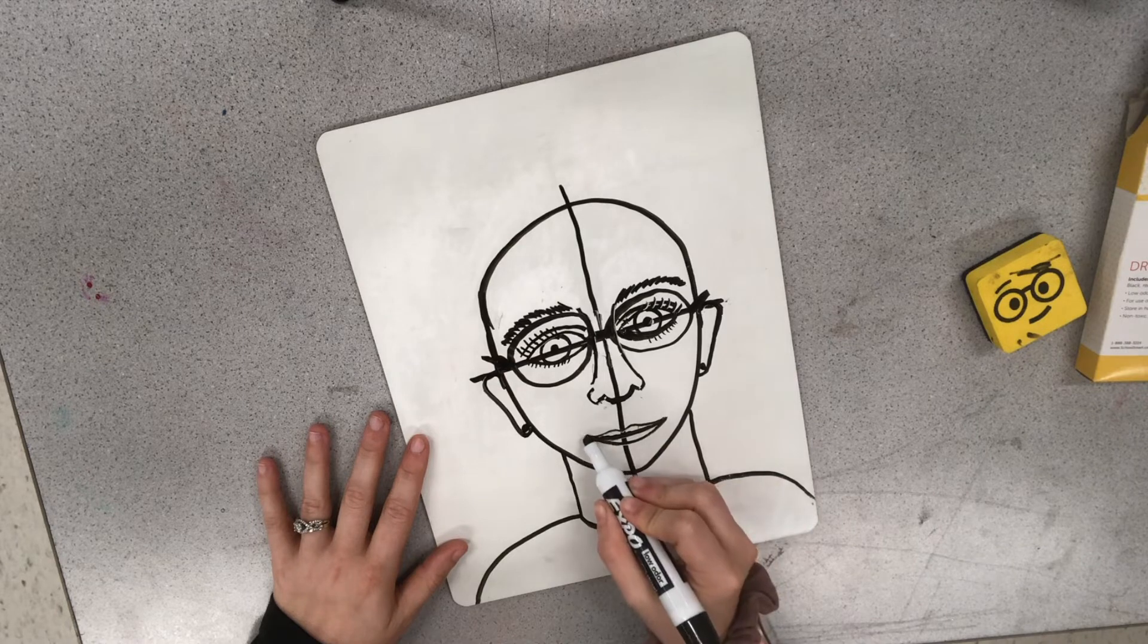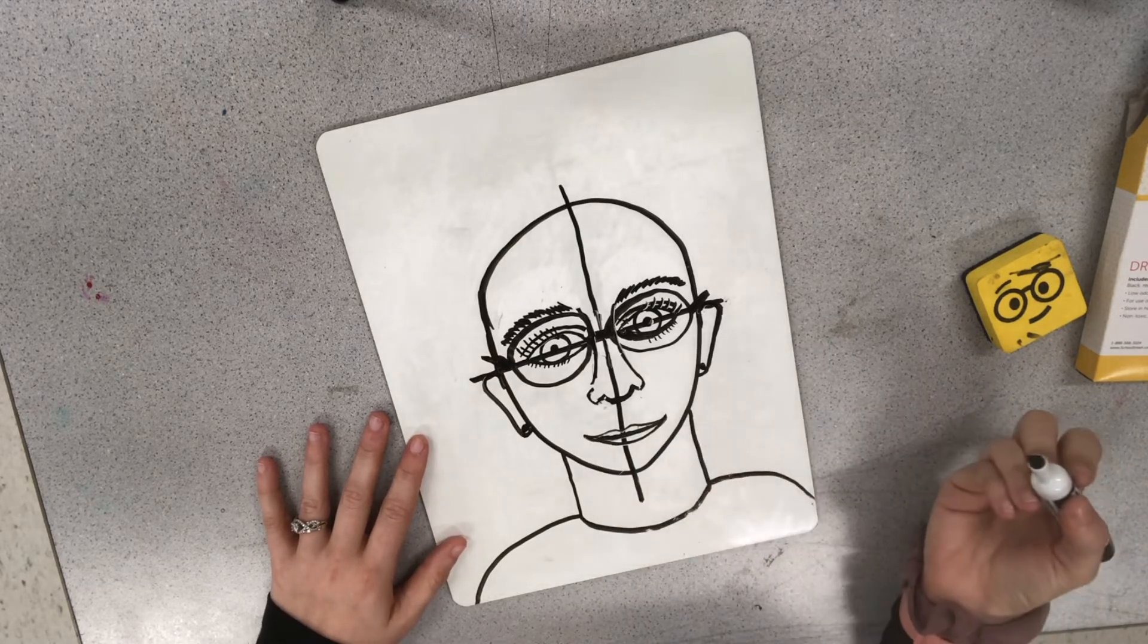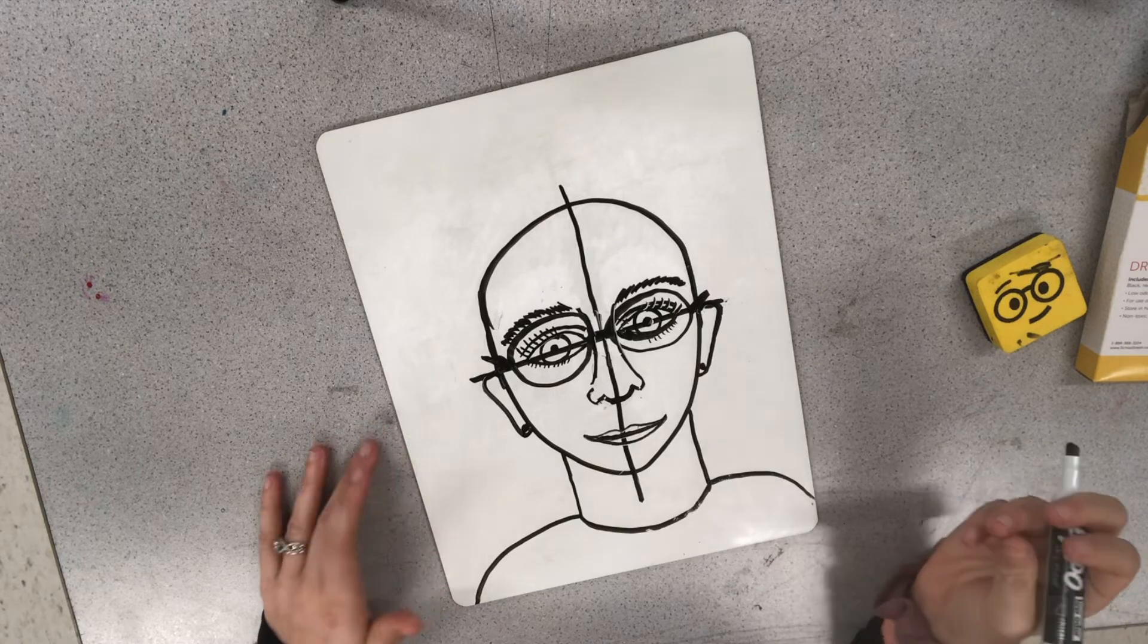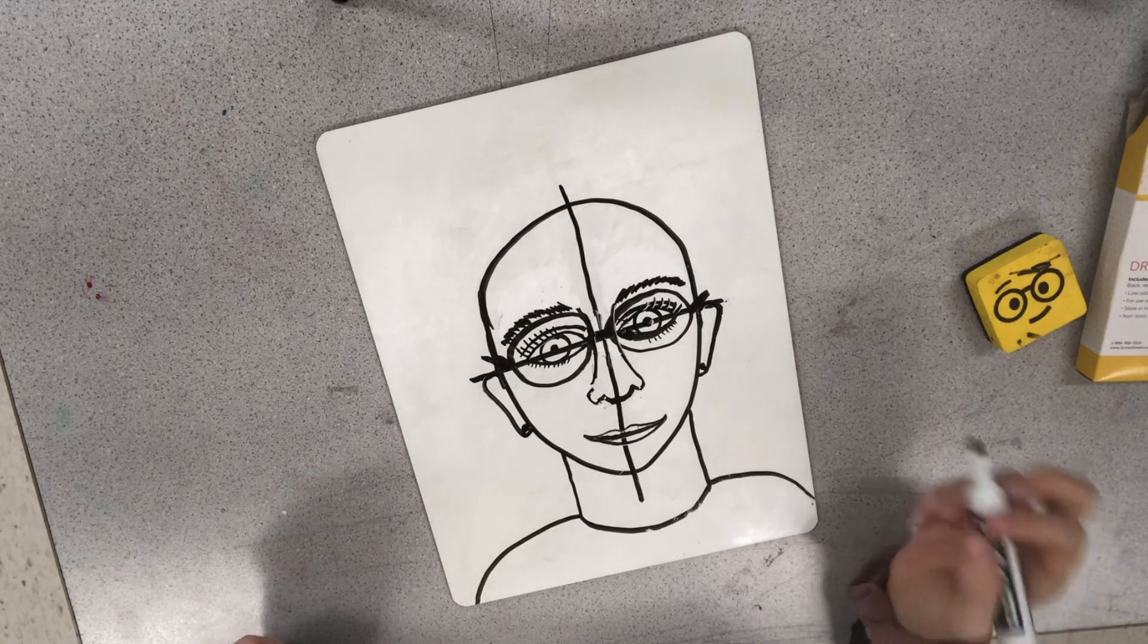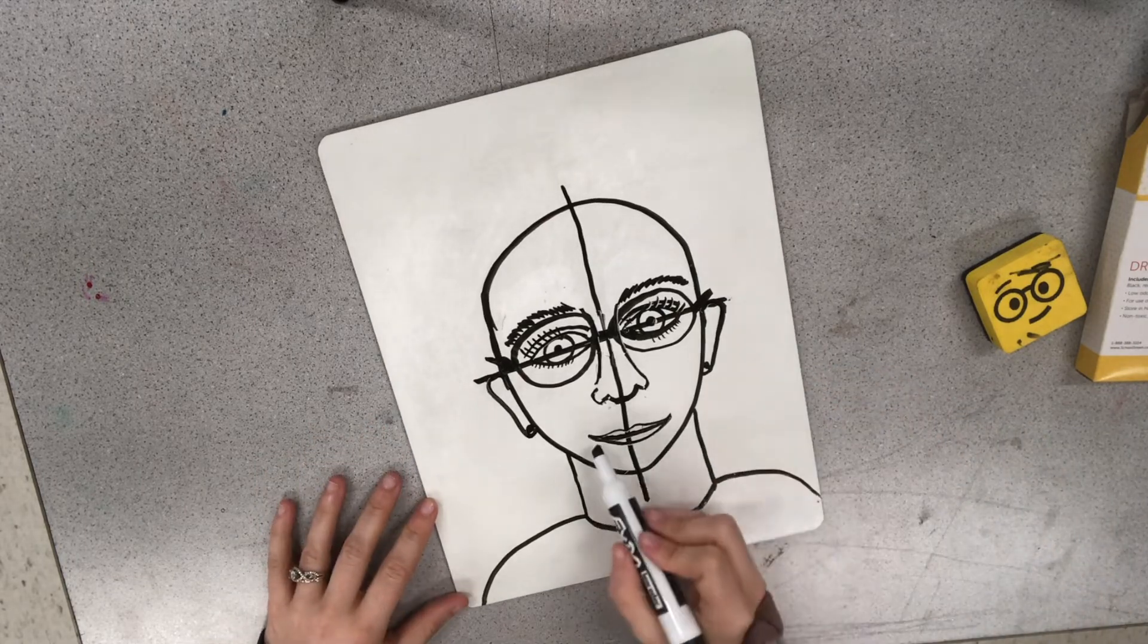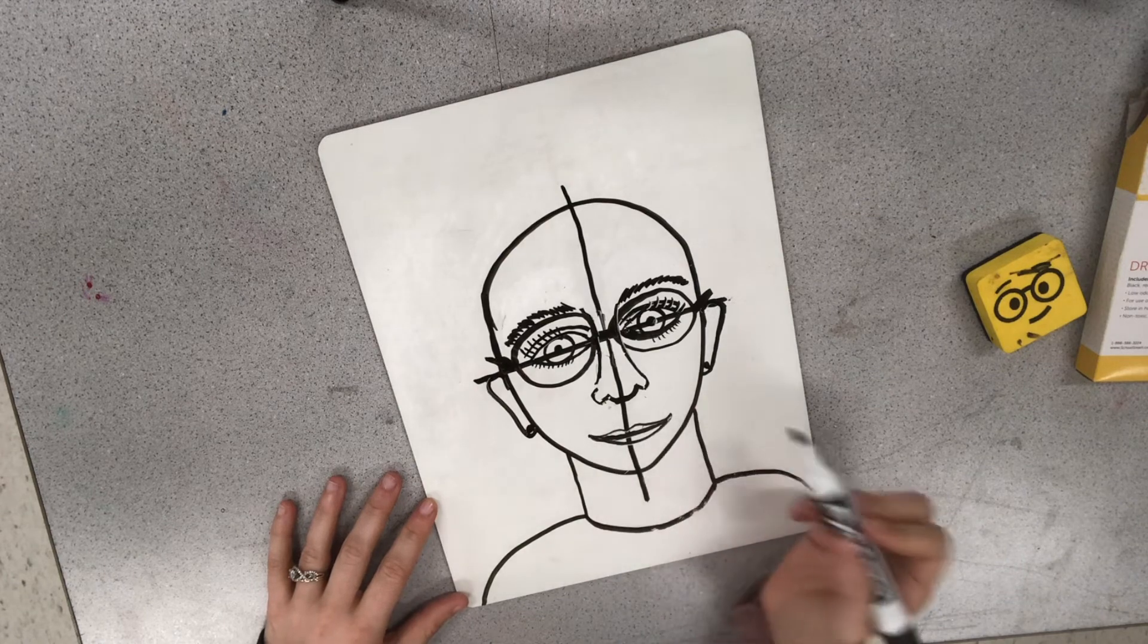And you can determine how large that should be or how small or how skinny that should be. And if your person's smiling, you kind of arch the lips up like this.